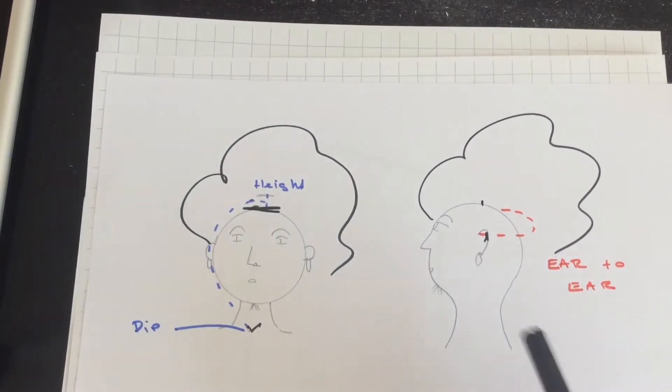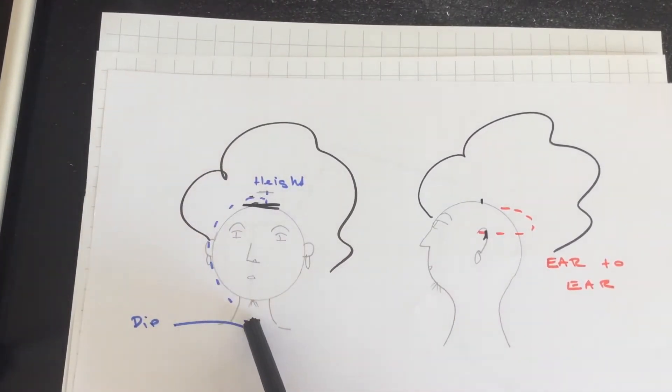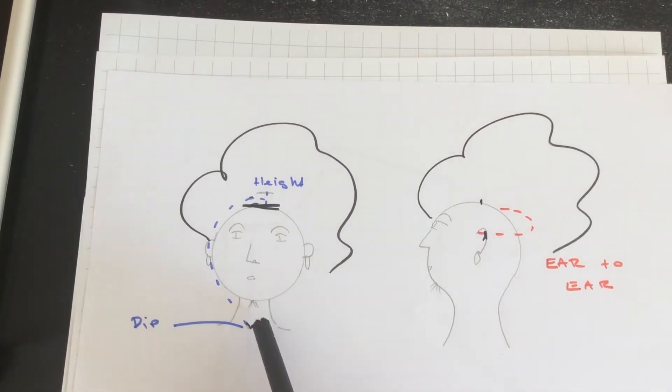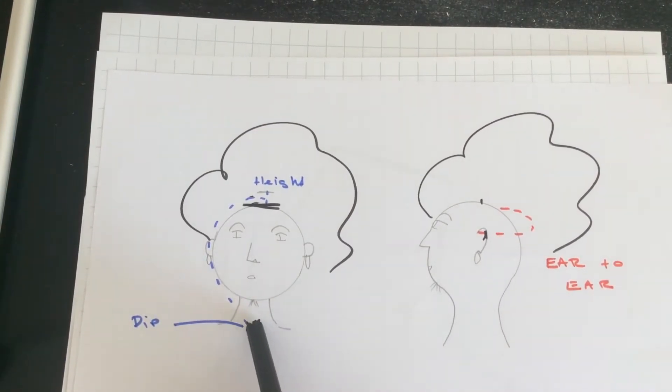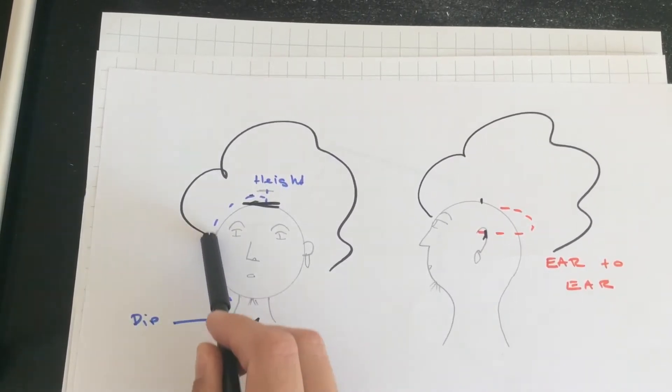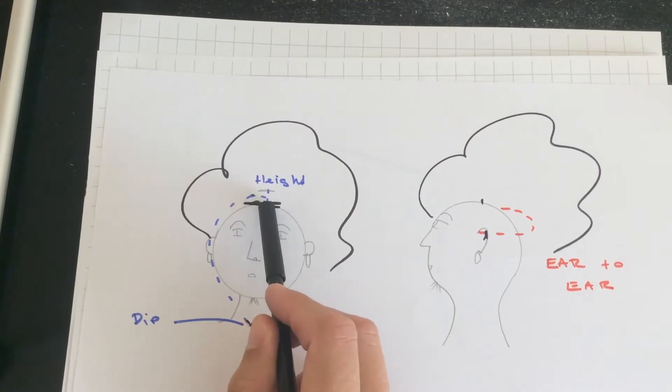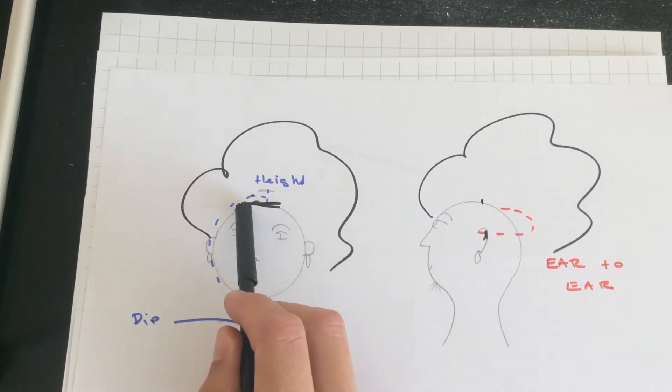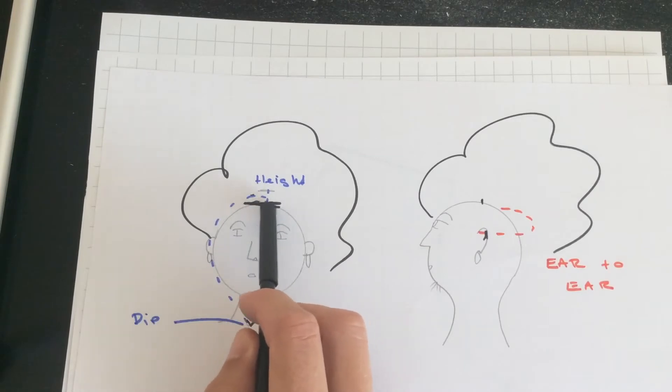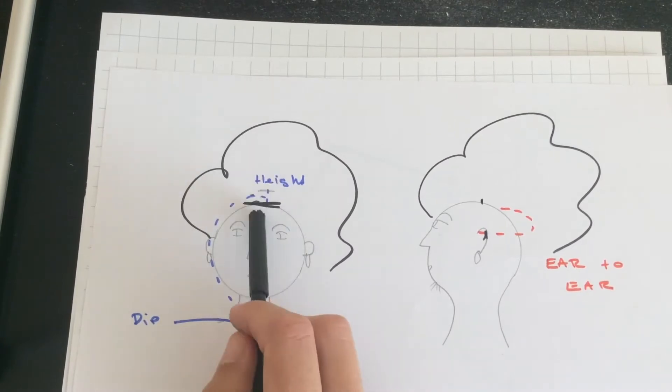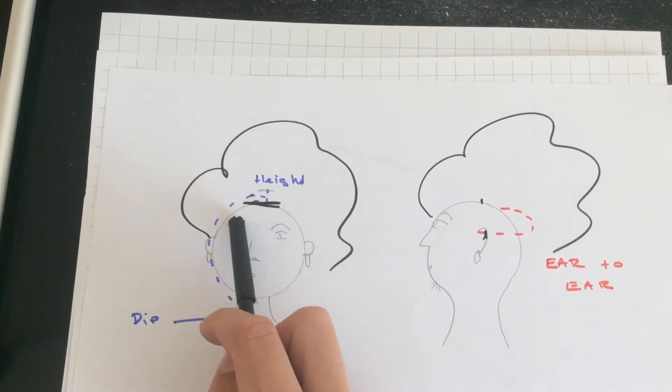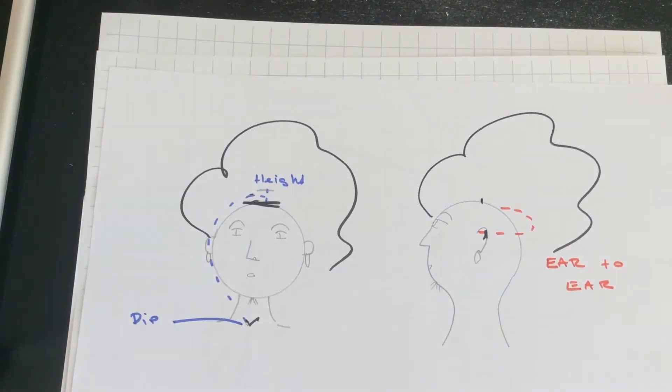Two of the measurements that we need are the head height down to the dip in the neck. That's just below where the Adam's apple is normally. You can kind of feel an indentation just above the collarbones, and then the height is the highest point of the head. You might want to take it from the crown point, or it's quite common for people to put a pattern master onto the top of somebody's head, lying it flat so that they can see how high it is. Definitely not a measurement you would do on your own if you can avoid it.